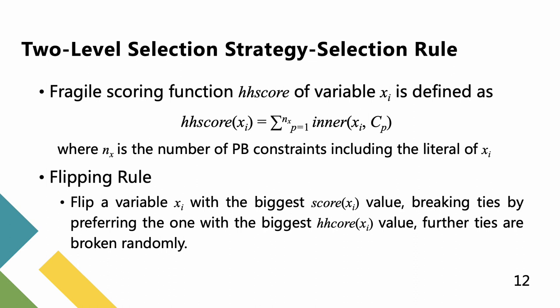Combining the respective advantages of SCAR and HHSC, we propose a two-level selection strategy as follows. In addition, experiments show that the trigger fraction of using HHSC at least once for all tested instances is about 99.6%. In flipping rule, flip a variable xi with the biggest SCAR value, breaking ties by preferring the one with the biggest HHSC. Further ties are broken randomly.